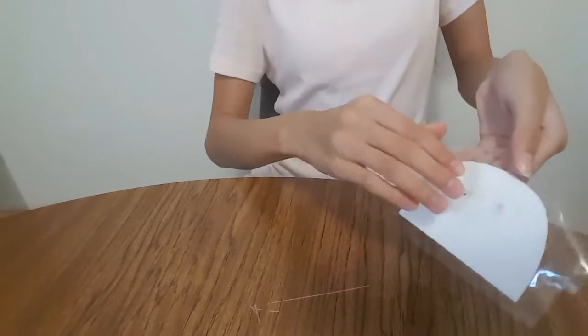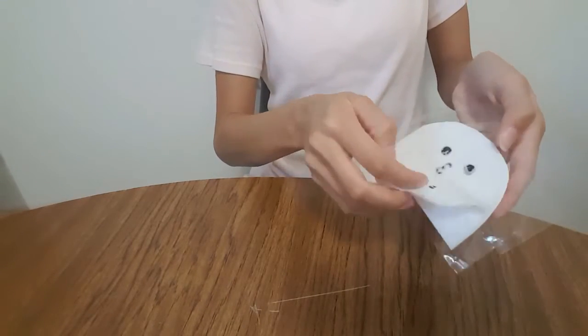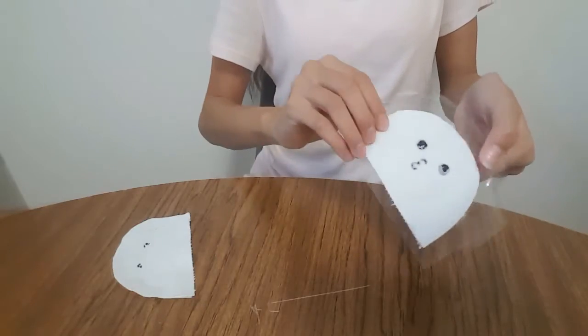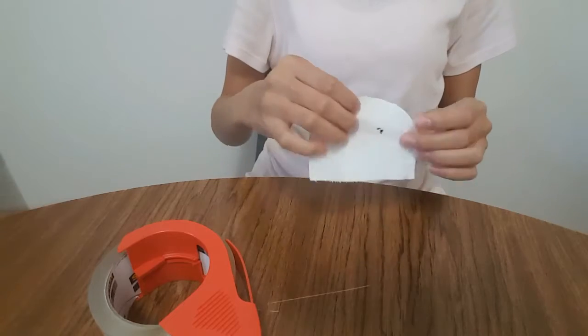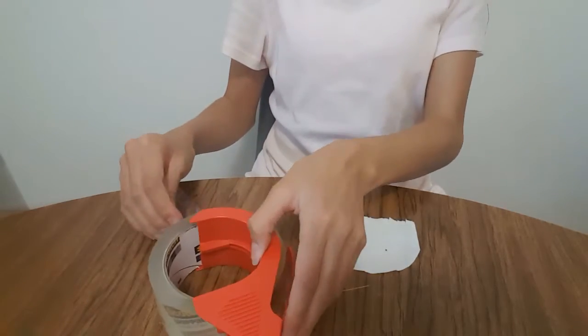Now you want to flip it around and peel off this back portion of toilet paper. But you'll still have your front portion. Now you'll want to repeat that on this back part of toilet paper and just put more tape on it.